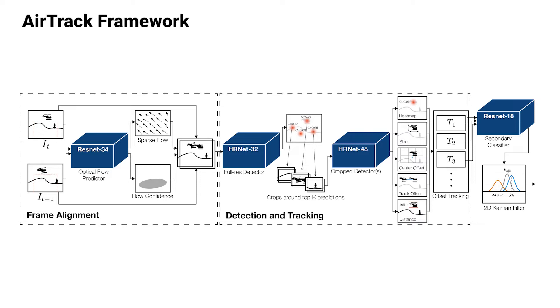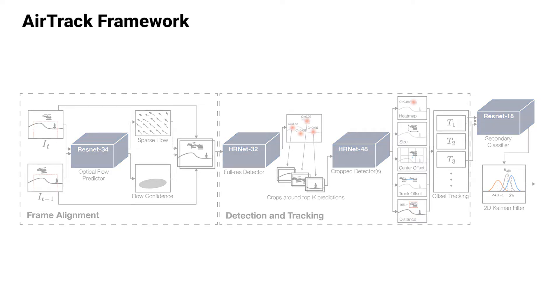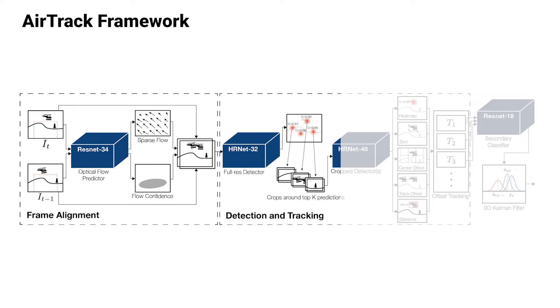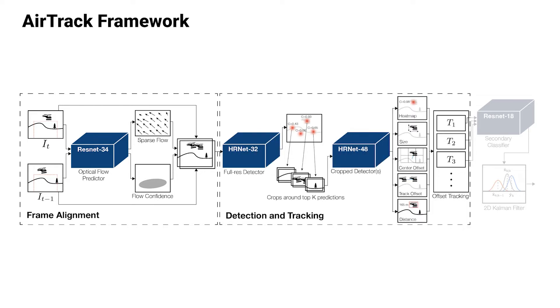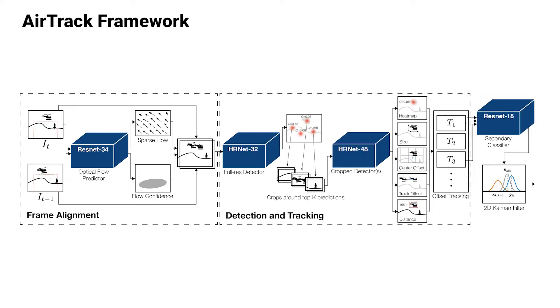AirTrack uses full-resolution images to detect and track objects. AirTrack consists of the following four sequential modules: frame alignment, detection and tracking, secondary classification, and intruder state update.